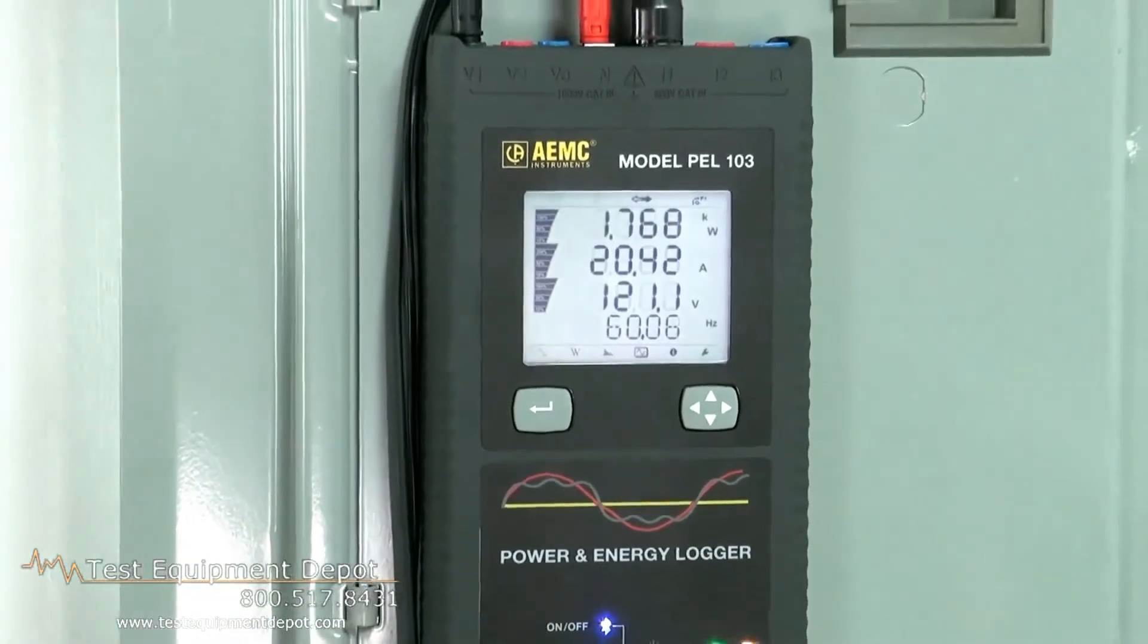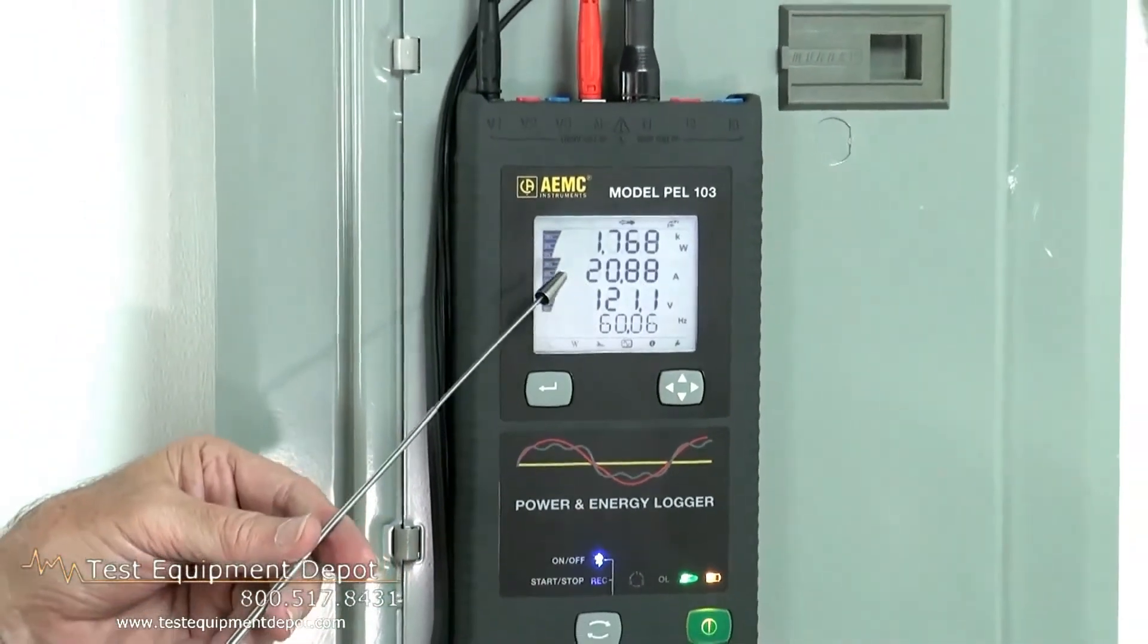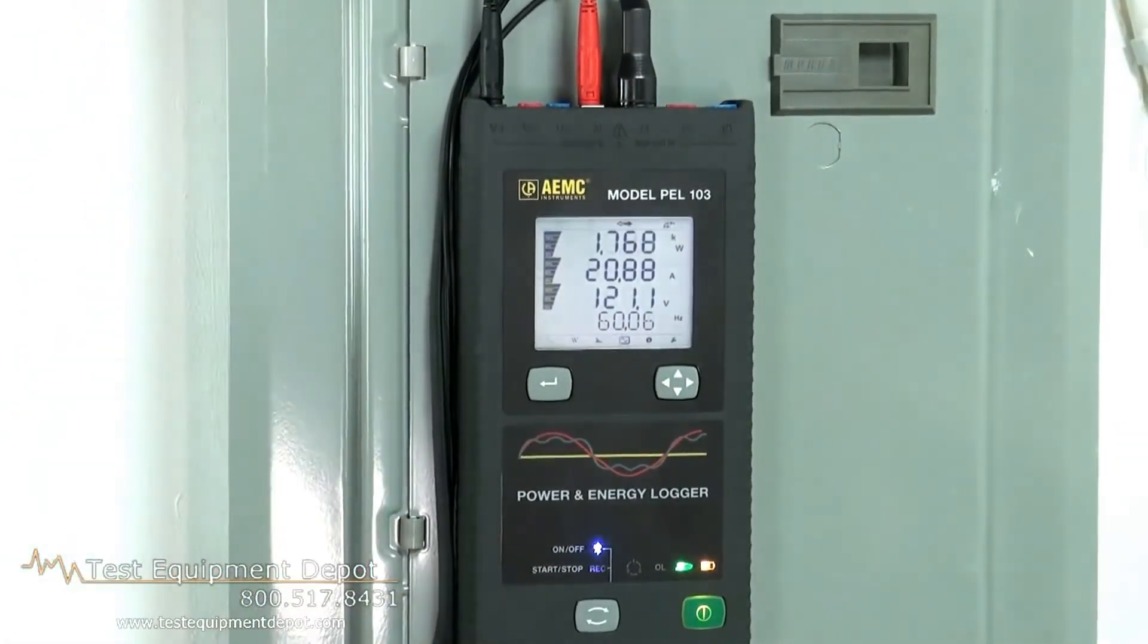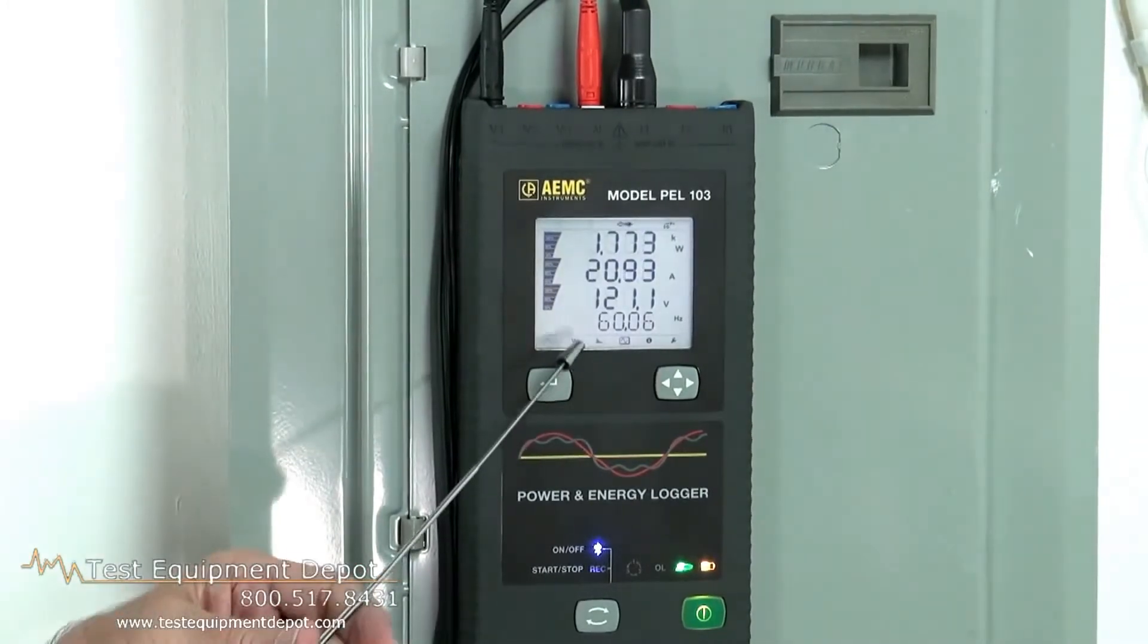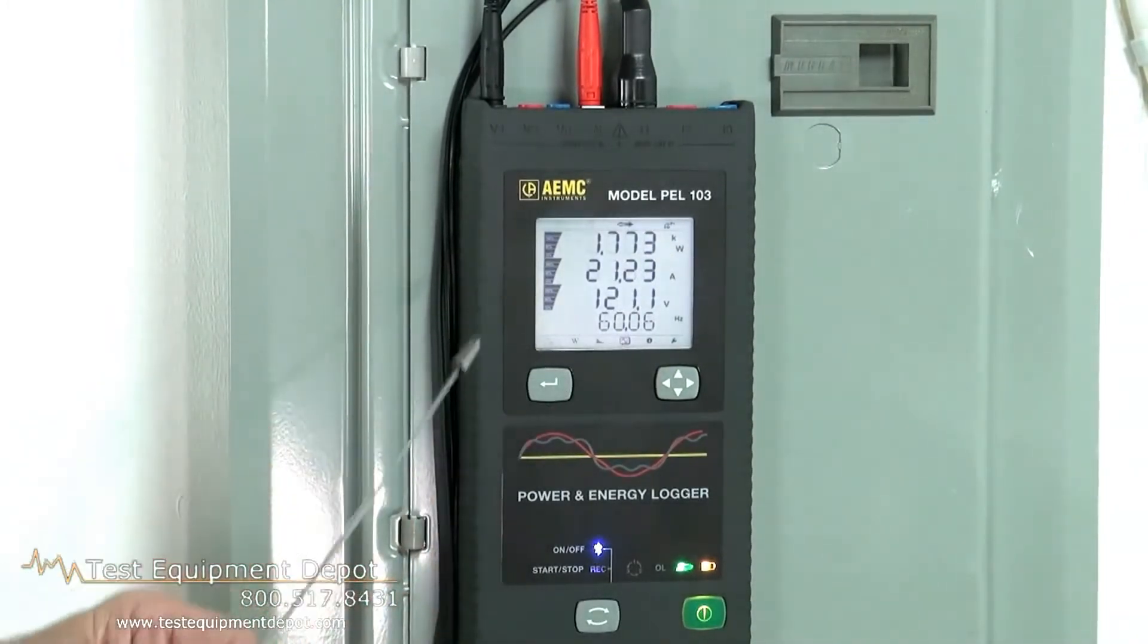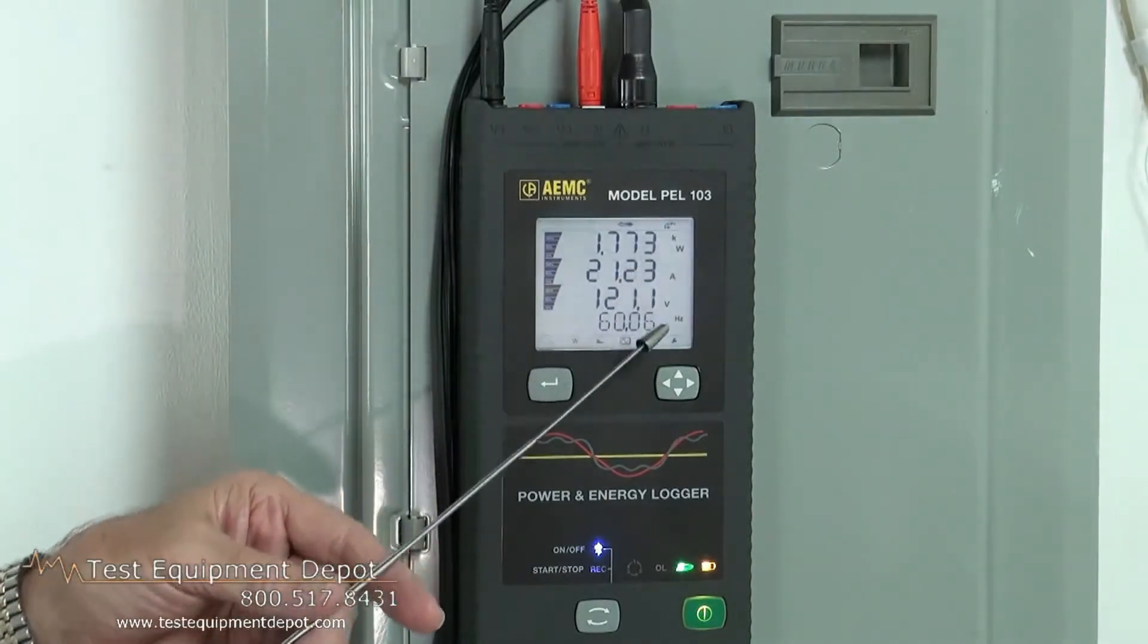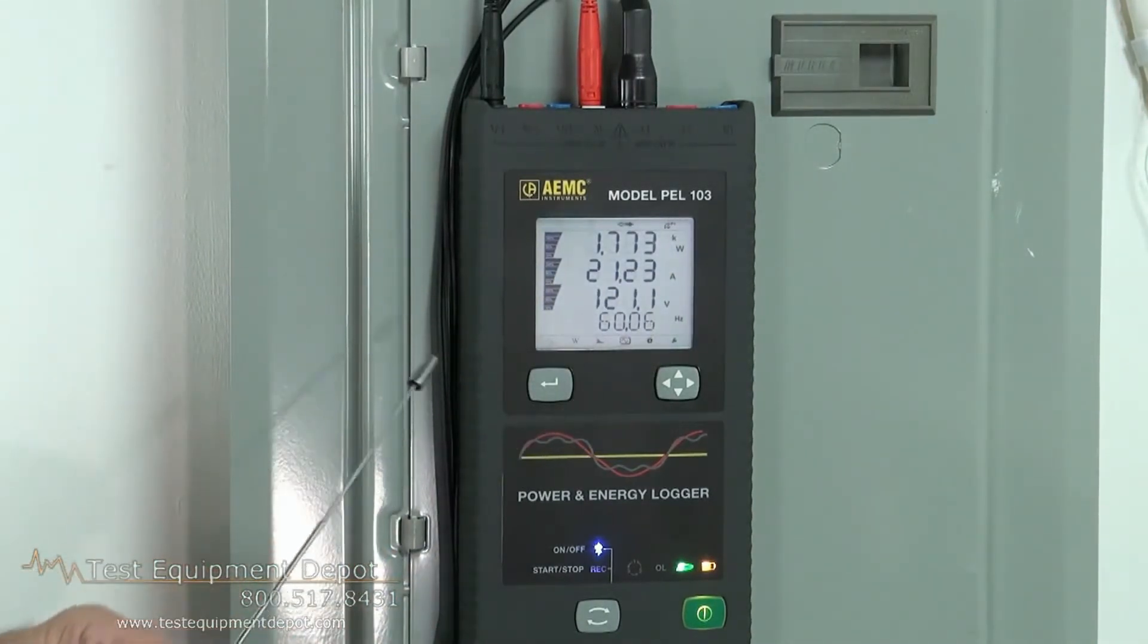Next, we can set demands for high and low alarms, and we can store those. And this is what tells us whether we're out of tolerance or not. Again, it's watching kilowatts, amps, volts, and frequency.